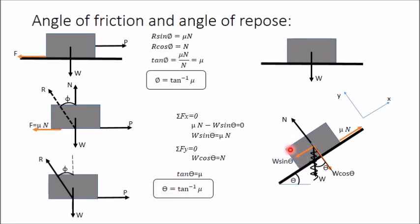That means if you increase or decrease the weight of this block, there will be no change in the angle of repose — as long as the two materials in contact remain the same and the coefficient of friction between the two surfaces is the same. The weight of the block does not affect the angle of repose; the block will always start to slide at the same angle θ. The angle of repose and angle of friction are both numerically equal and can be calculated using the formula θ = tan⁻¹(μ).